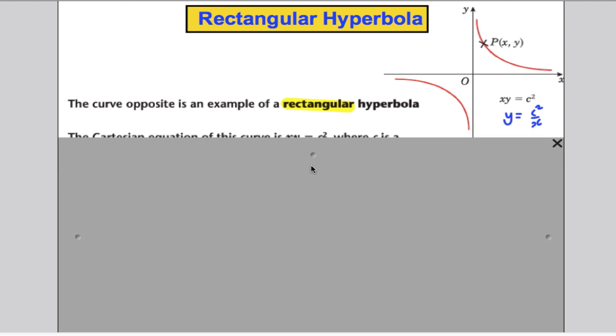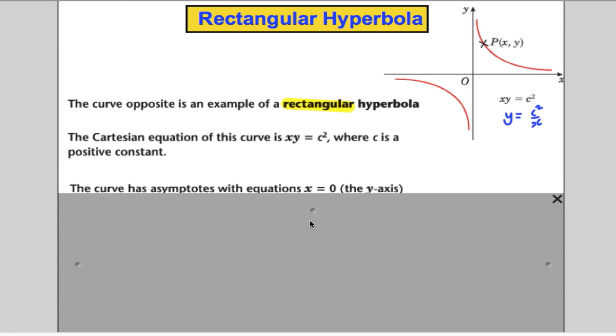So, they're called asymptotes, those points there. So, there's the curve. The Cartesian form is xy = c², where c is a positive constant. The curve has asymptotes that x = 0, the y-axis, and y = 0, the x-axis, as I mentioned.